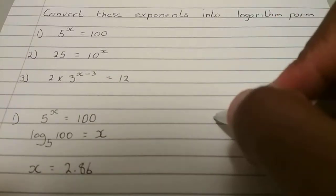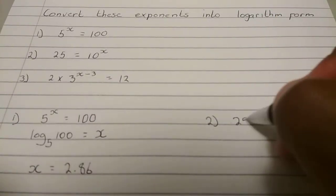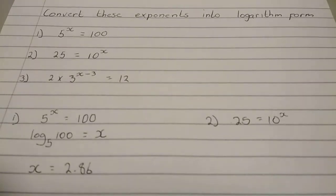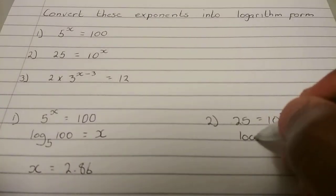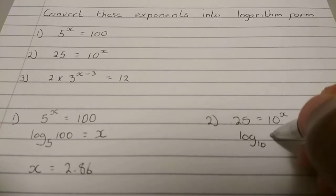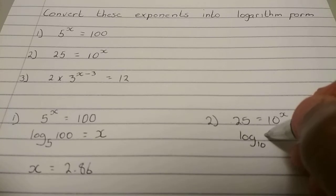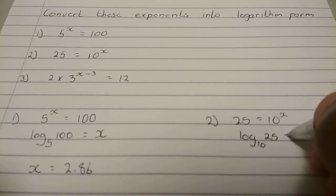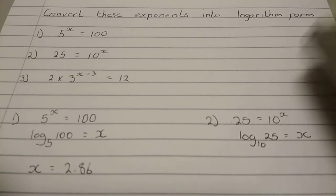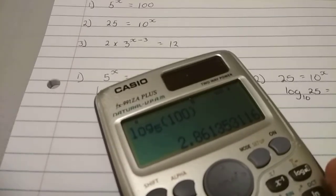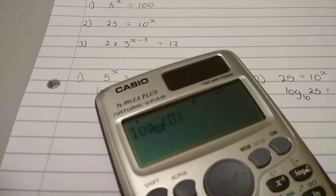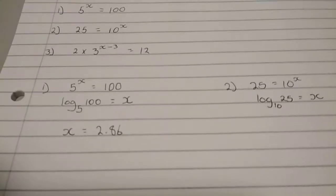The next one, number 2, is 25 is equal to 10x. Same thing. That's the base. So we have log. The base is 10. And then swap what's left. So that means the 25 comes this side and then the x goes there. Likewise, we're just going to use a simple calculator for this one. So we're going to have log with the base of 10. And then I'm at 25. 1.38.